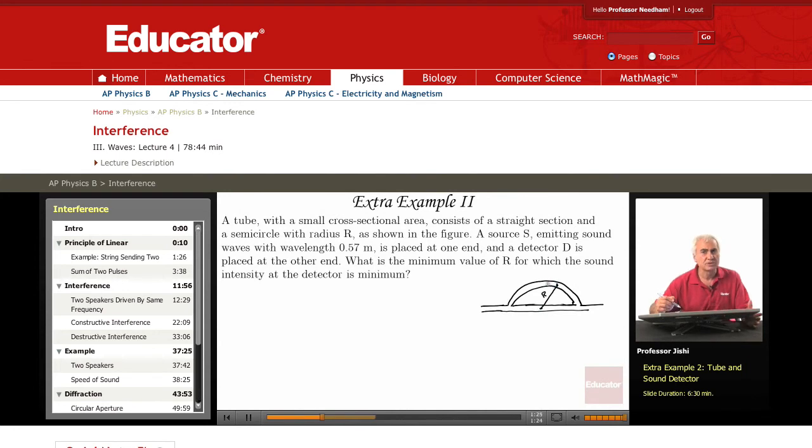So we have a semicircle of radius R, and this is the section. We put a source on one end, a source of sound here, and a sound detector on the other end. Now this source emits waves with wavelength lambda equals 0.57 meters.